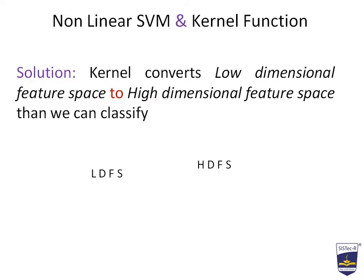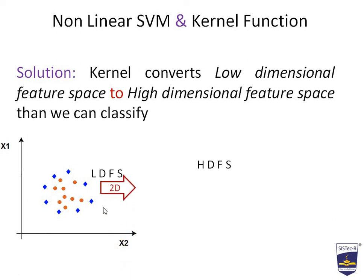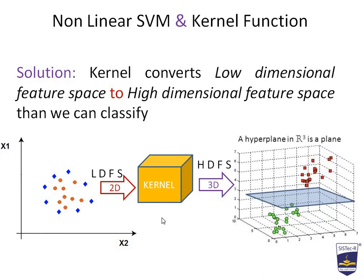The role of the kernel function in solving problems with non-linear SVM: the kernel function converts a low-dimensional feature space (LDFS) to a high-dimensional feature space (HDFS), so we can classify. For example, a 2D image is applied to the kernel function and it generates a 3D image. In the 3D representation, the patterns are clearly visible and we can draw a hyperplane. This is how we solve the problem of non-linear SVM with a kernel function.